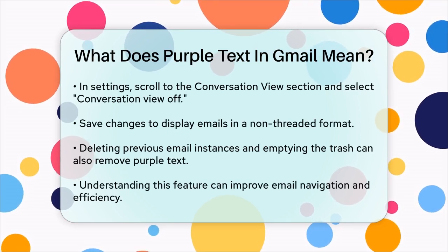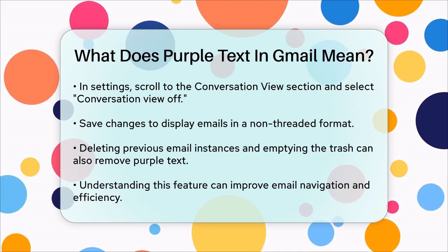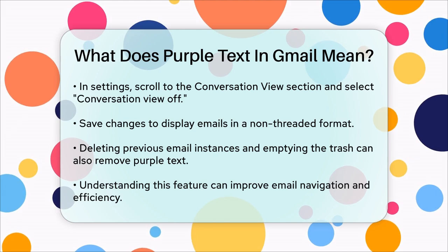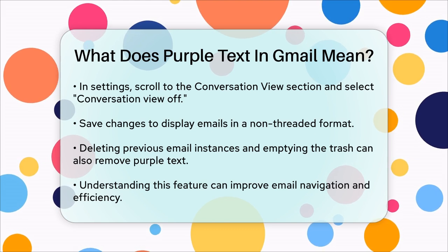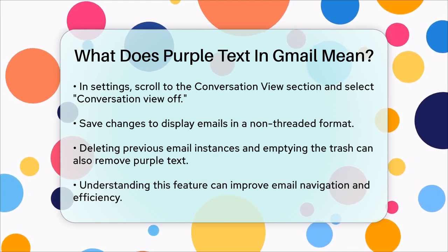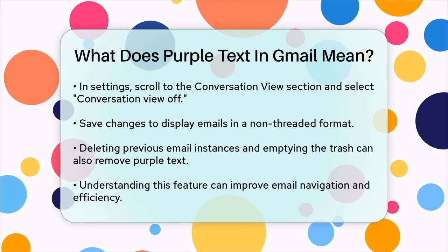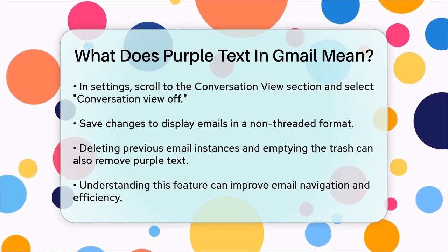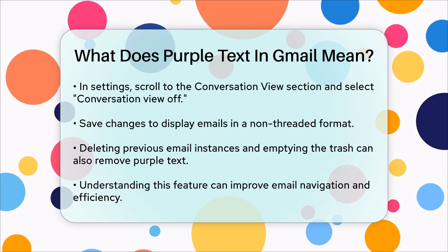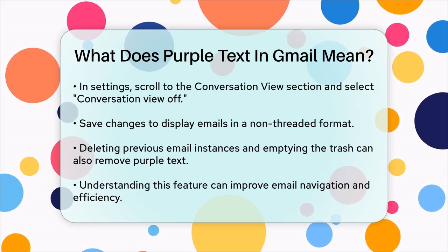Another way to avoid the purple text is to delete all previous instances of the email thread and empty the trash. Once you've done this, the purple text will disappear because there will be no previous messages for Gmail to compare. So, the next time you see purple text in your Gmail, you'll know it's just Gmail's way of helping you navigate your email conversations more efficiently.